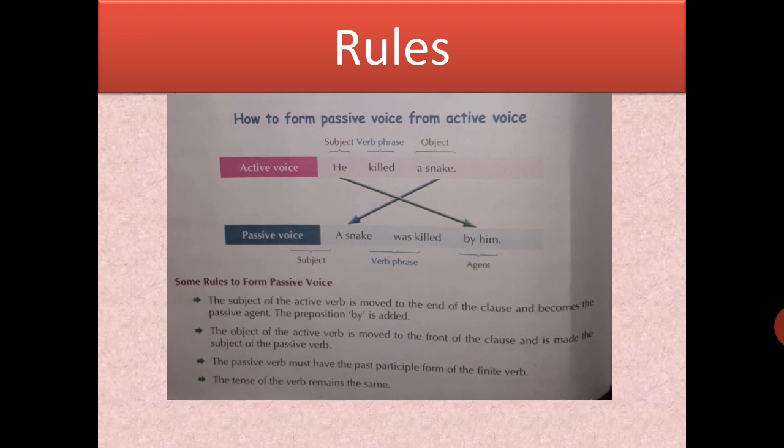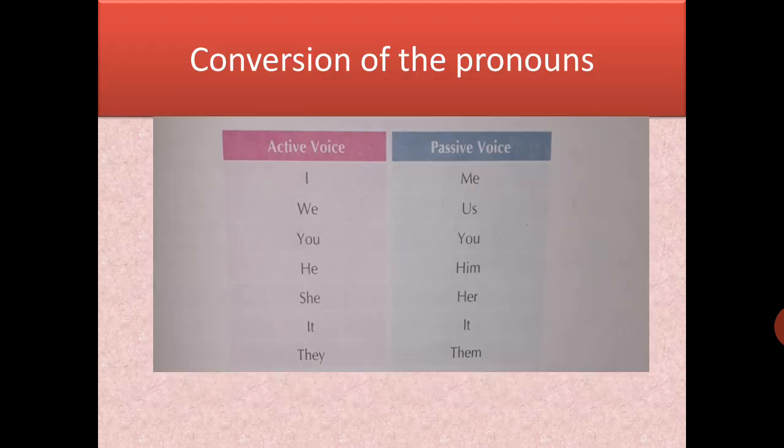Next, the preposition 'by' always comes after the verb third form, and after that at the last will be the object. There are also some changes in the pronouns. The conversion of pronouns: 'I' becomes 'me', 'we' becomes 'us', 'you' remains same, 'he' becomes 'him', 'she' becomes 'her', 'it' remains same, 'they' becomes 'them'.